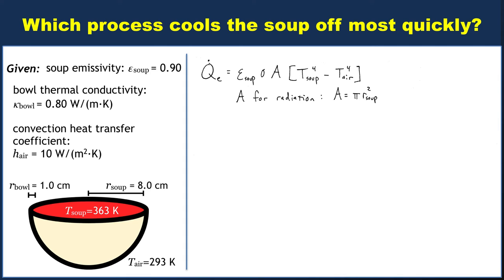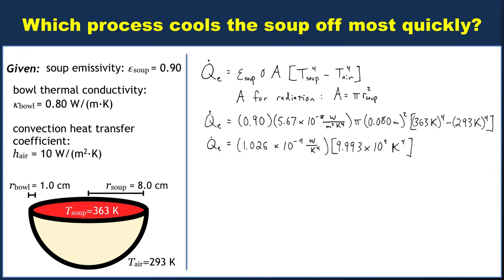We said epsilon was 0.9. We just said the area was πr_soup², and we know the two temperatures. So let's put everything in carefully and multiply out. You can see that the Kelvin to the fourth power will cancel, and we get out that the radiative power associated with a hot bowl of soup is about 10.3 watts.